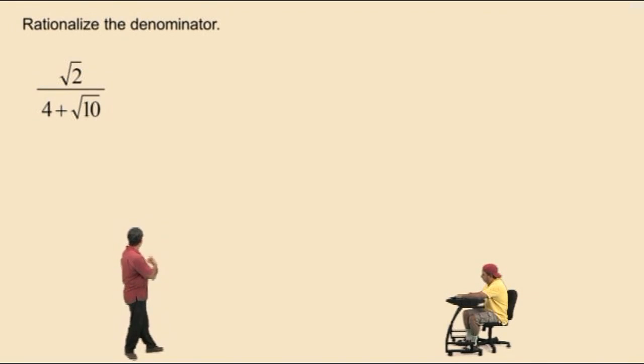Now, Charlie, what is the conjugate of 4 plus the square root of 10? 4 subtract square root of 10. Very nice. So we'll multiply both the numerator and denominator by that conjugate.